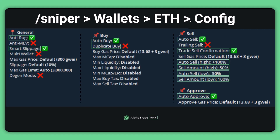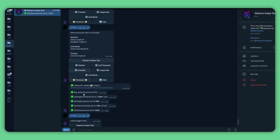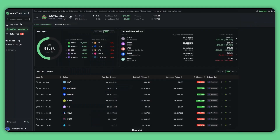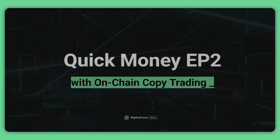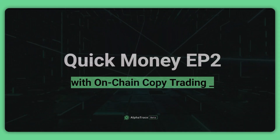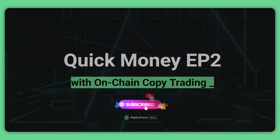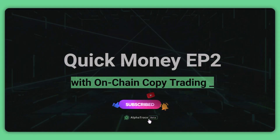Make sure you enable auto approve too. Now your Sniper Bot is ready. After this, you can visit the bot regularly to monitor your copy trading transactions. You can also copy your wallet address to check your profit and loss on Alpha Trace. And that's it for how to make quick money with on-chain copy trading. If you like this video, don't forget to like and subscribe to our channel for more content like this. See you soon.